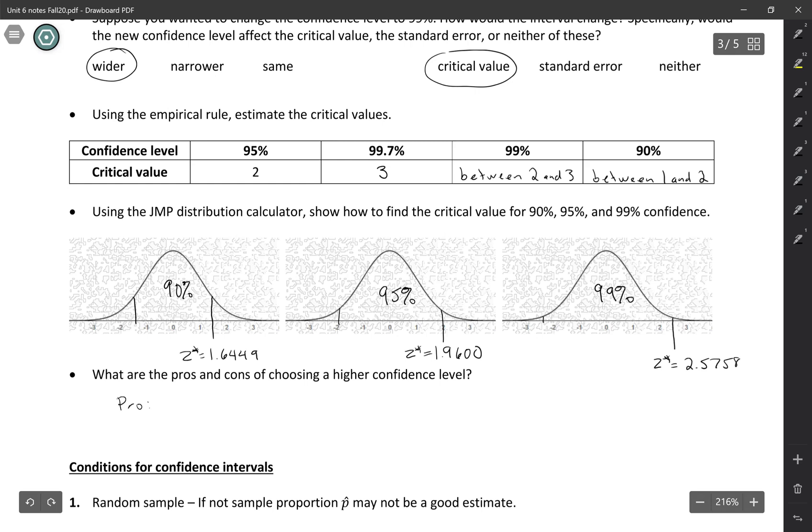So the big advantage of having a higher confidence level is that you're going to be more likely to capture the true parameter. So if you're 99% confidence, that means that the formula that you're using to calculate the confidence interval is going to capture the true parameter 99% of the time. So obviously being more sure that you have the real parameter in there, that's an advantage, but it does have a big con.